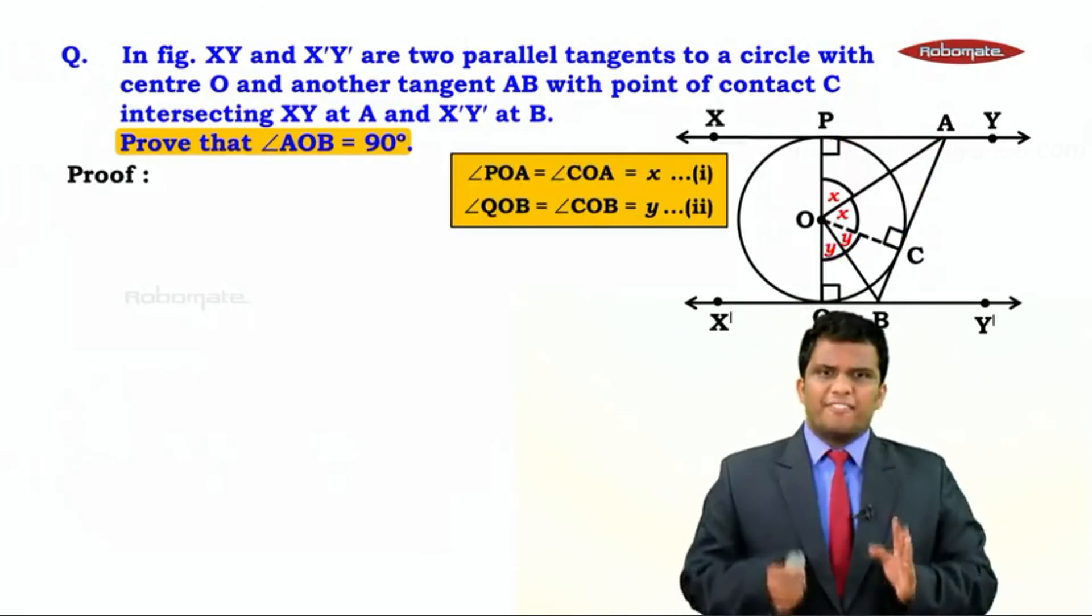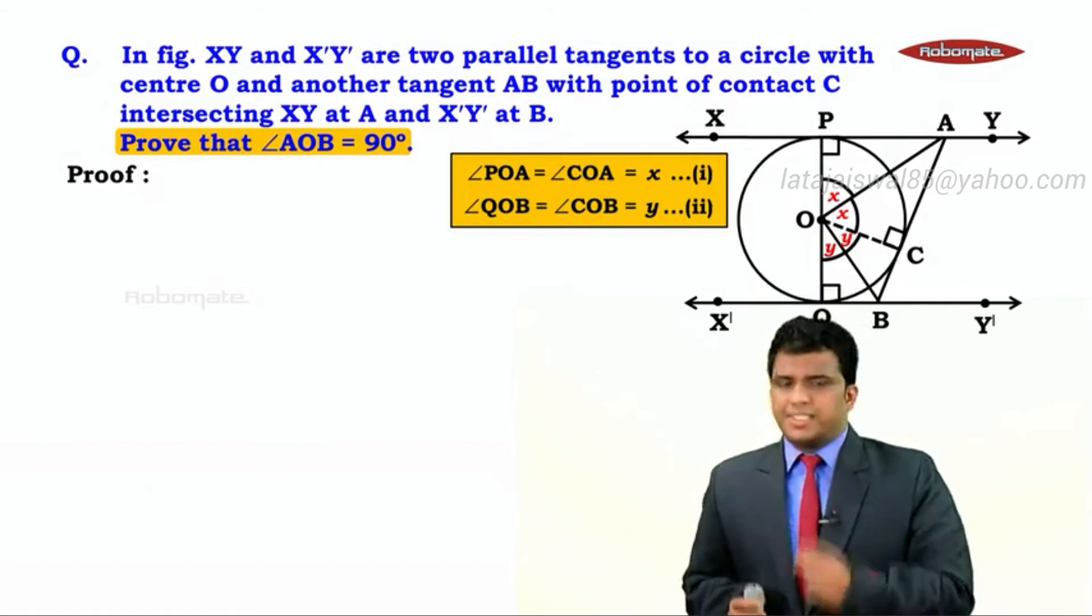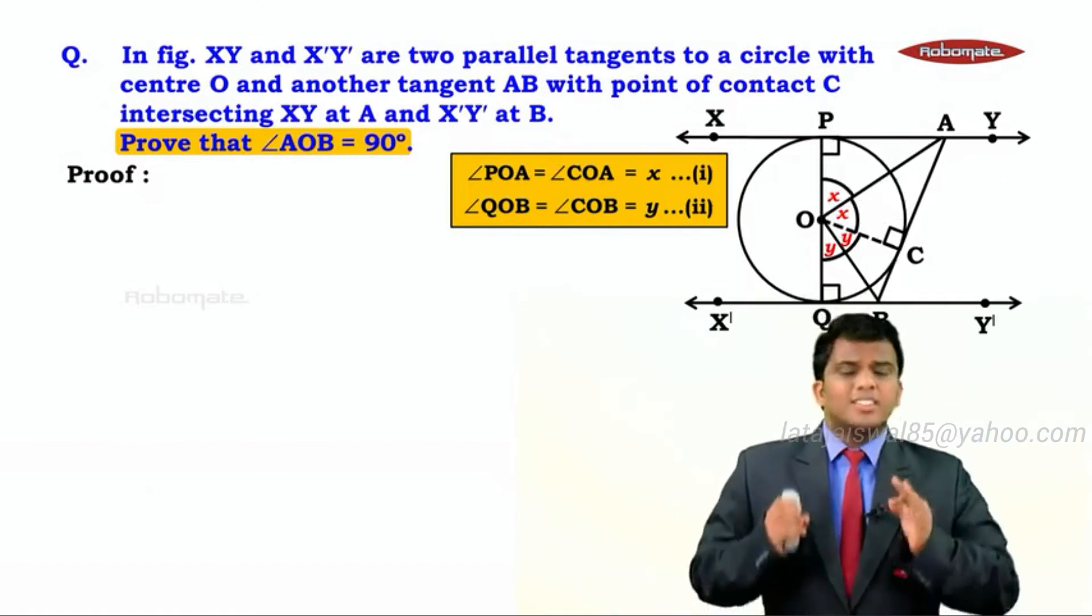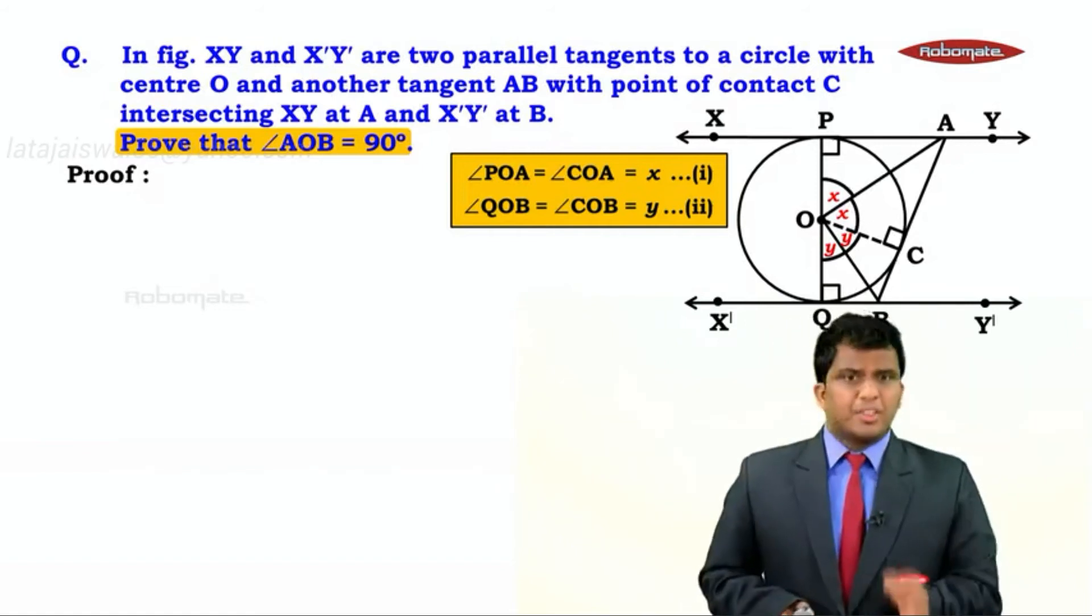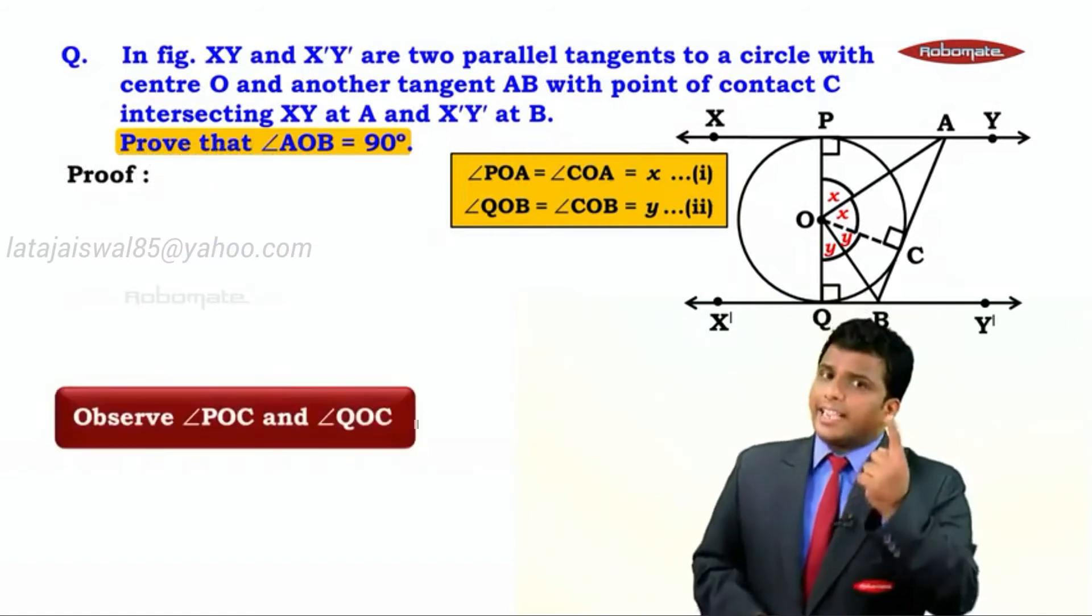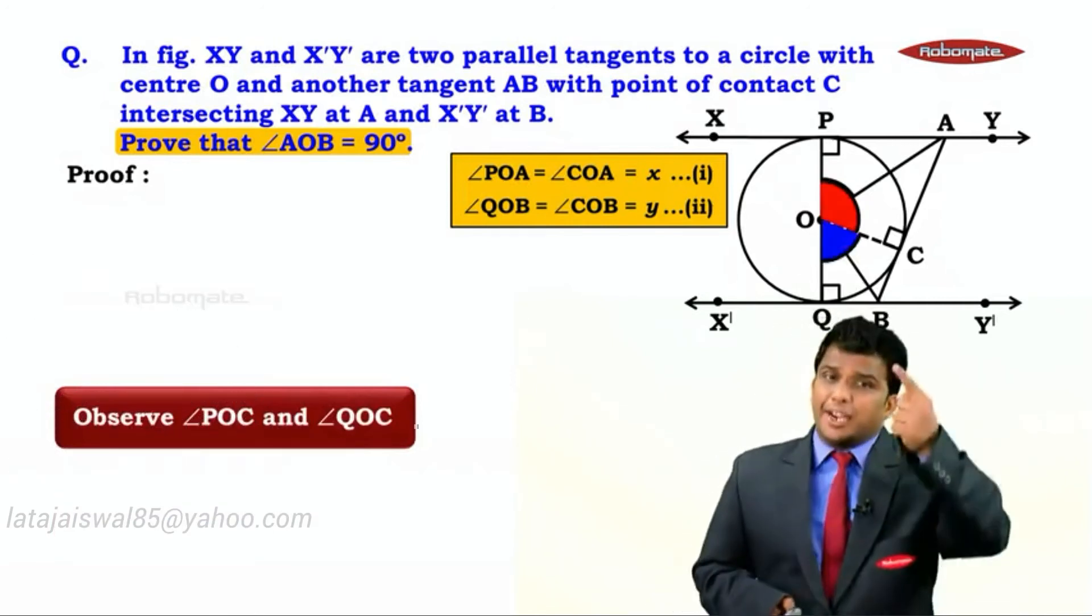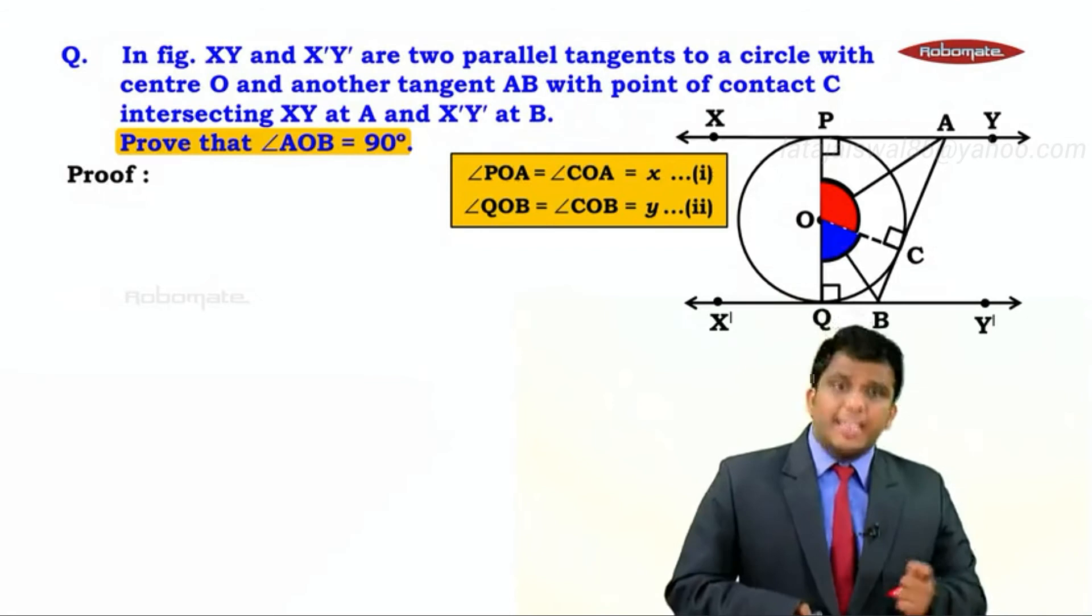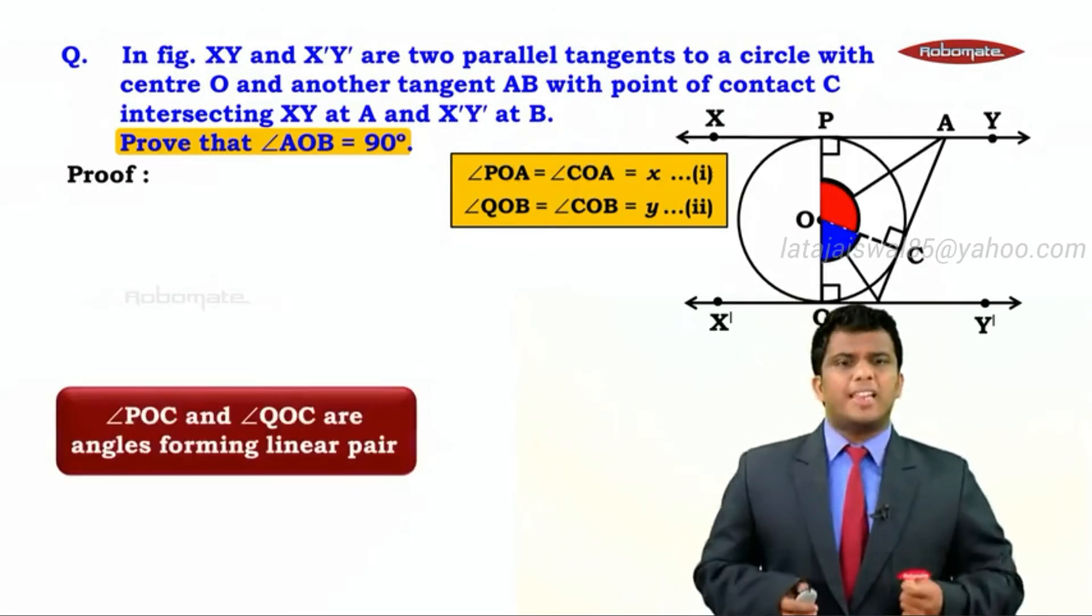Now this is where we have reached with the help of the figure. We got two variables: X and Y. To solve the sum further, it's essential that we have some relation between X and Y. So for that, if you look at the figure, we have two angles: angle POC and angle QOC. They lie on the same line. We can say they form a linear pair.